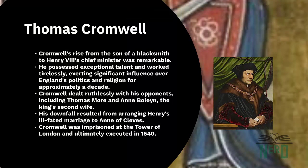Thomas Cromwell experienced a remarkable ascent from being the son of a Putney blacksmith to becoming the chief minister of Henry VIII. A man of extraordinary talent and an immense capacity for hard work, Cromwell wielded significant influence over England's political and religious landscape for around 10 years. He dealt ruthlessly with those who opposed him and his royal master, including his rival Thomas More and Henry's second wife Anne Boleyn. However, his downfall came after orchestrating Henry's short-lived marriage to Anne of Cleves. Subsequently, he was imprisoned at the Tower of London and ultimately faced execution in 1540.